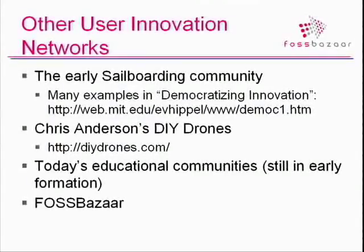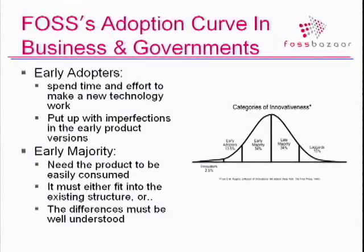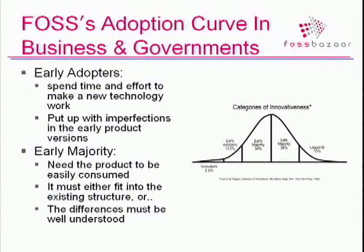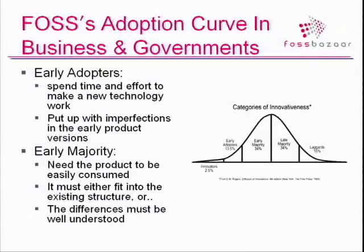Fossbazaar is also a user innovation network. It's different in that it's focused on open source software, but not on development or code creation. It's actually focused on what are the best ways to manage open source inside of an organization. I think we can look at open source software adoption in many organizations — it's very much in its early adopter phase. Looking at the original categories of innovation: innovator phase, early adopter phase, early majority, and late majority. And Clayton Christensen's book talked about how right between early adopters and early majority there's this chasm.